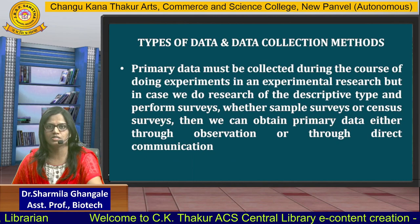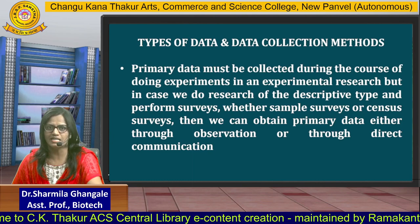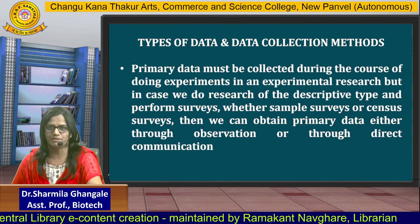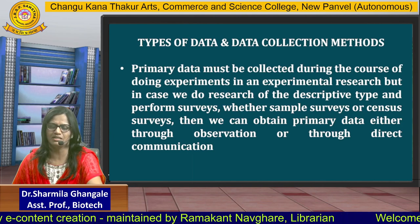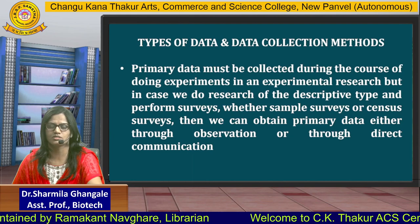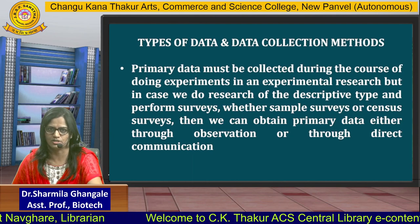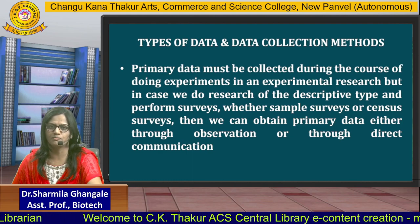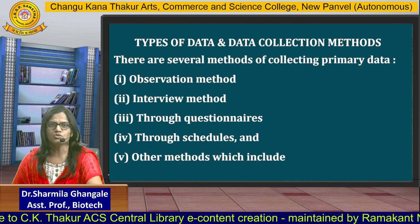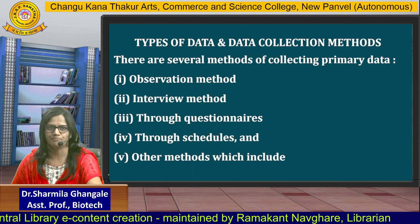Primary data must be collected during the course of doing experiments in experimental research. But in case you do research for a descriptive type, you should go with surveys — sample surveys, census surveys, or many other surveys — and these surveys will give you the result. Survey-based results will be given by survey-based data collection. Survey-based methods of primary data collection could be through observation or through communication. As far as primary data is concerned, there are several methods of collecting it. The first method is the observation method, where the researcher observes something for the first time.